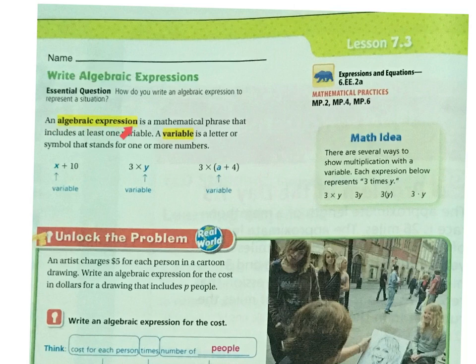An algebraic expression is a mathematical phrase that includes at least one variable. A variable is a letter or symbol that stands for one or more numbers. For example, X plus 10, where X is the variable. Or 3 times Y. Or 3 times the quantity A plus 4 in parentheses.